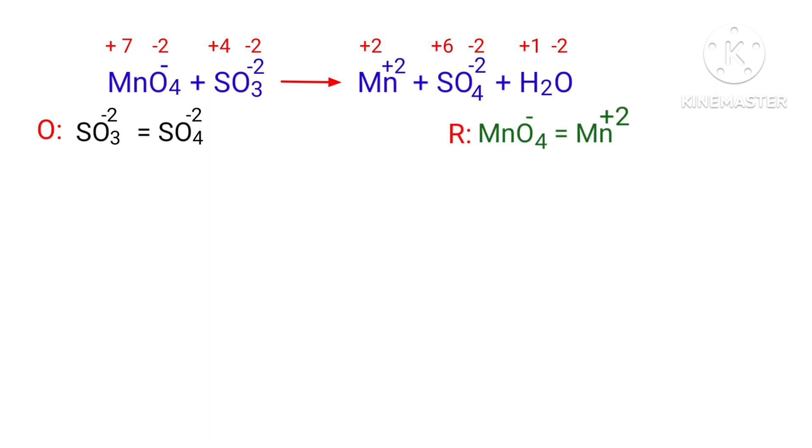In the ion-electron method, the overall reaction is divided into two half-reactions, which are then balanced separately and added together.